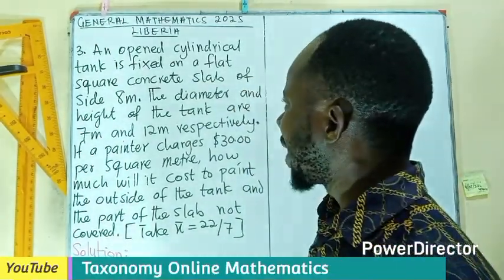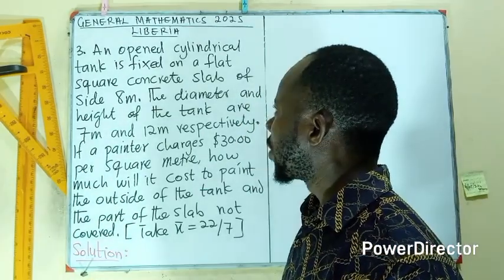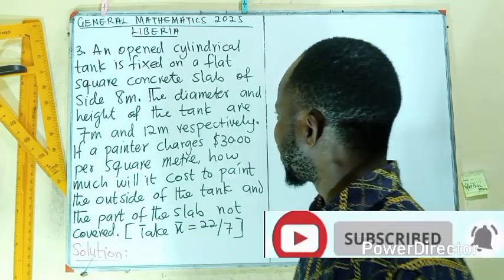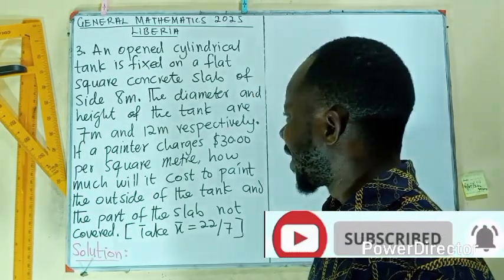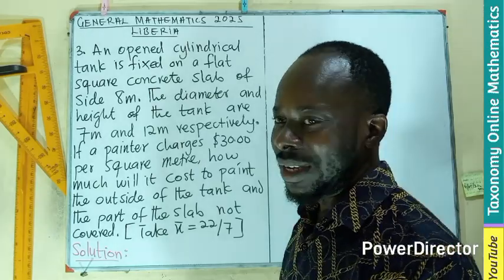An open cylindrical tank is fixed on a flat square concrete slab of side 8 meters. The diameter and height of the tank are 7 meters and 12 meters respectively.